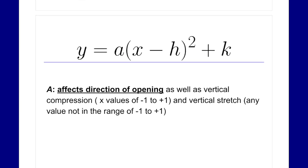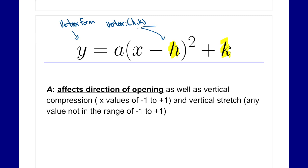This form, y equals a times x minus h squared plus k, is our vertex form. In a previous lesson we looked at the standard form, but this is our vertex form. The reason it's called the vertex form is because we are given the vertex in this equation — the vertex is h and k. These two values, h and k, give us our vertex, which is either the highest point or the lowest point, where the curve changes direction.